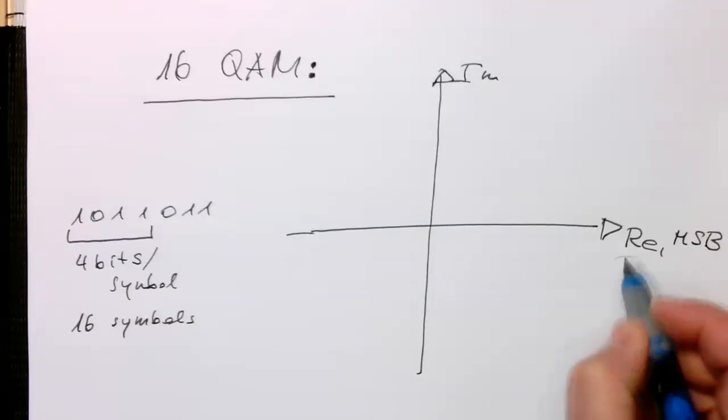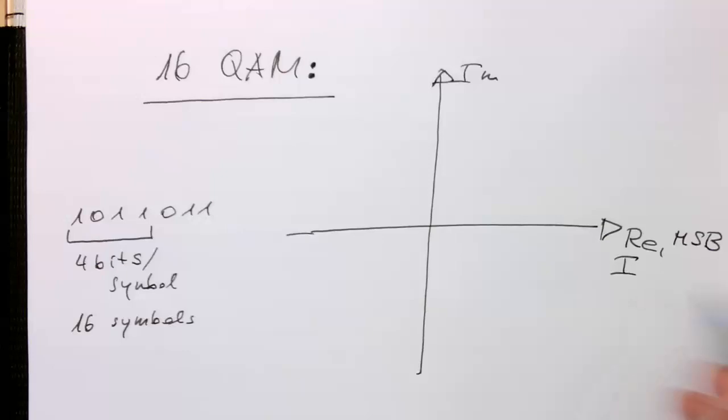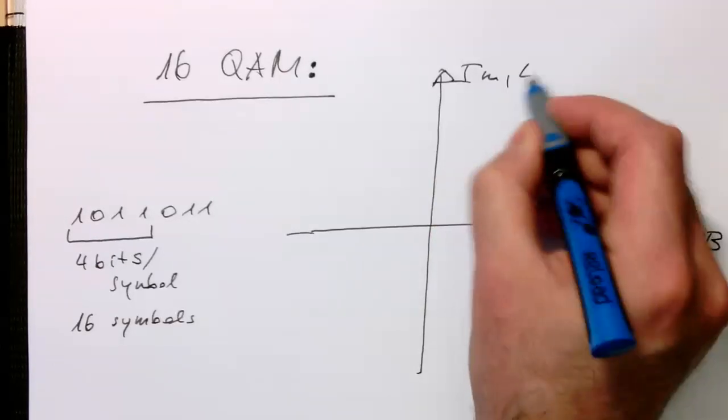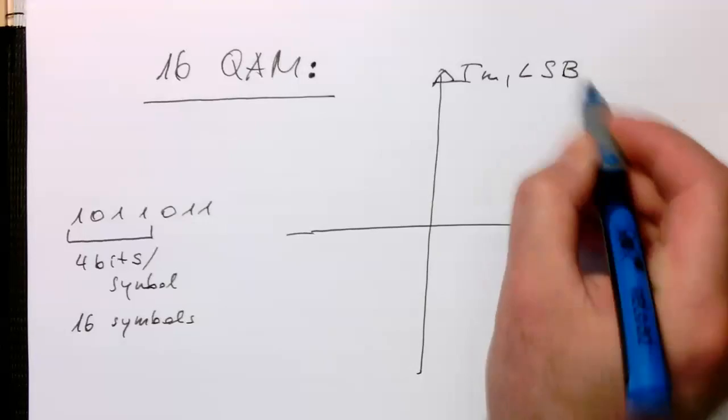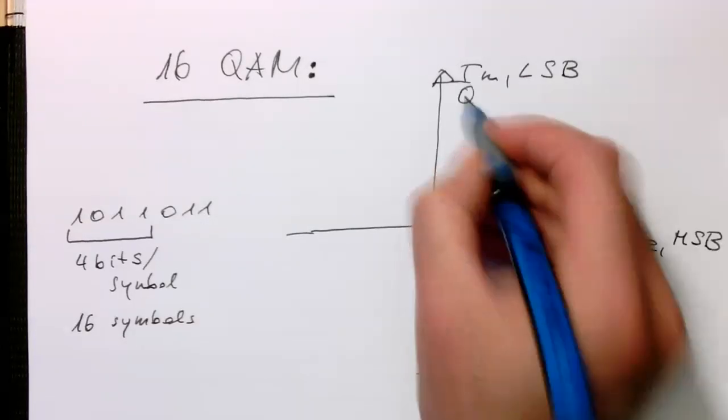Let's also remember this is also called I and the imaginary is responsible for our LSB in general and this is also called the Q component here.